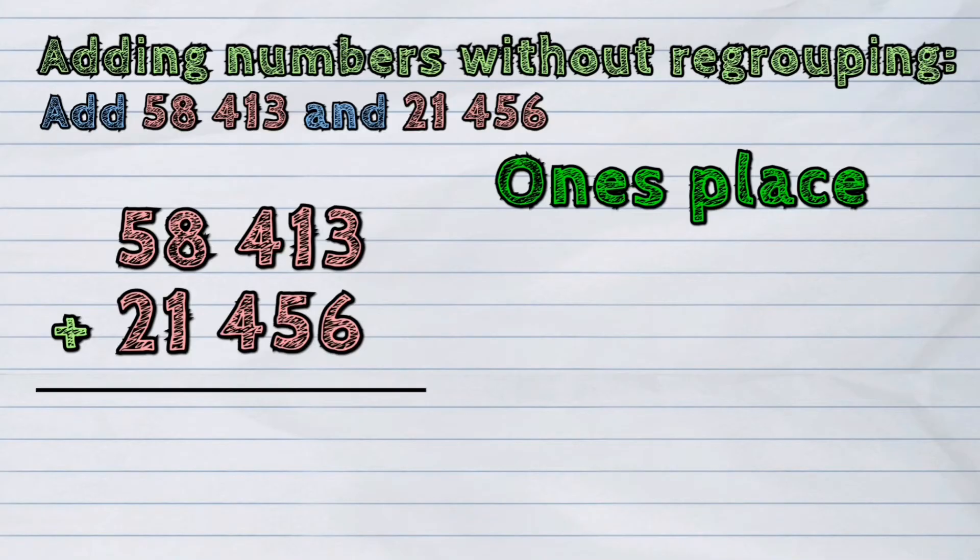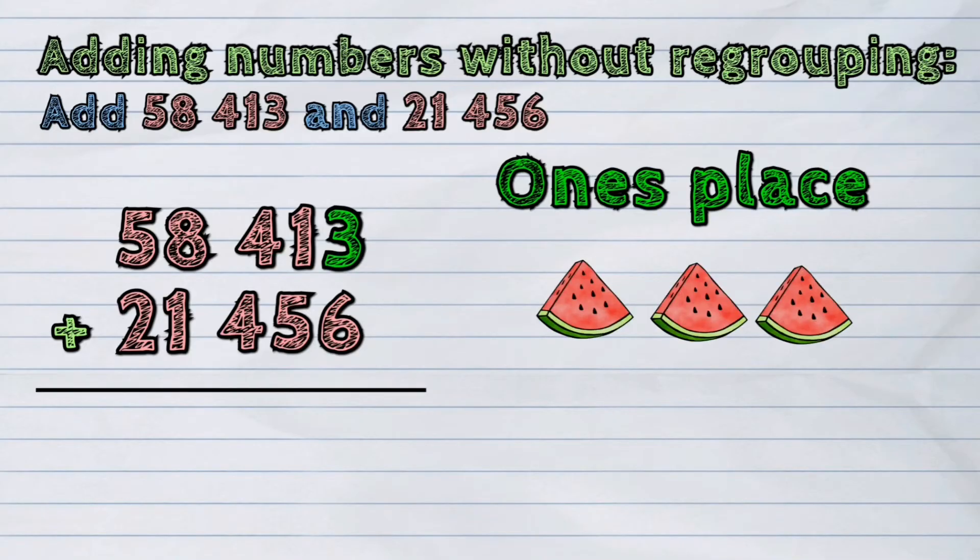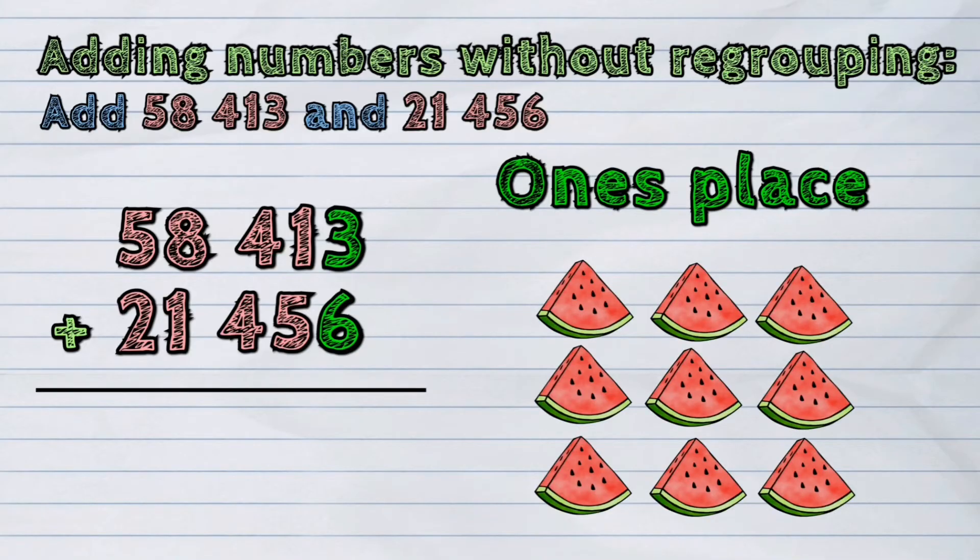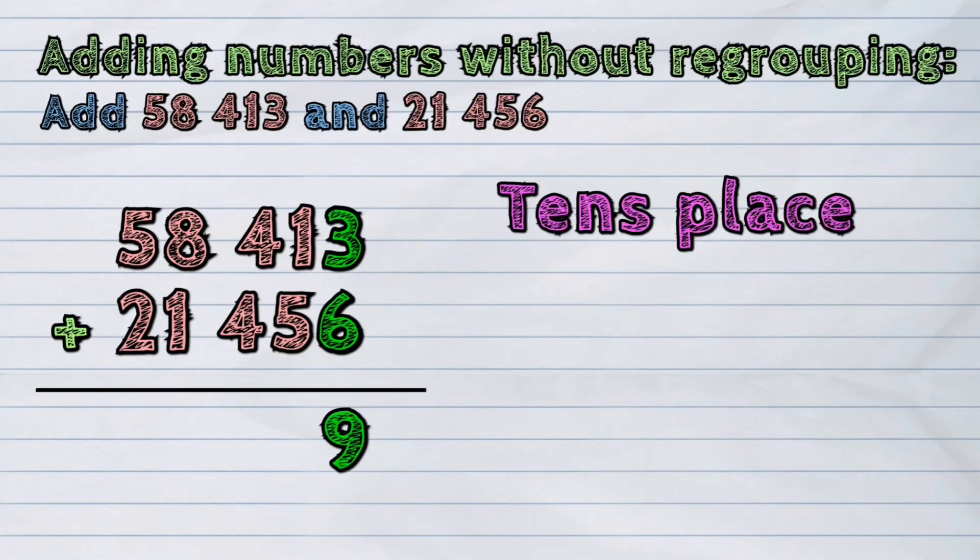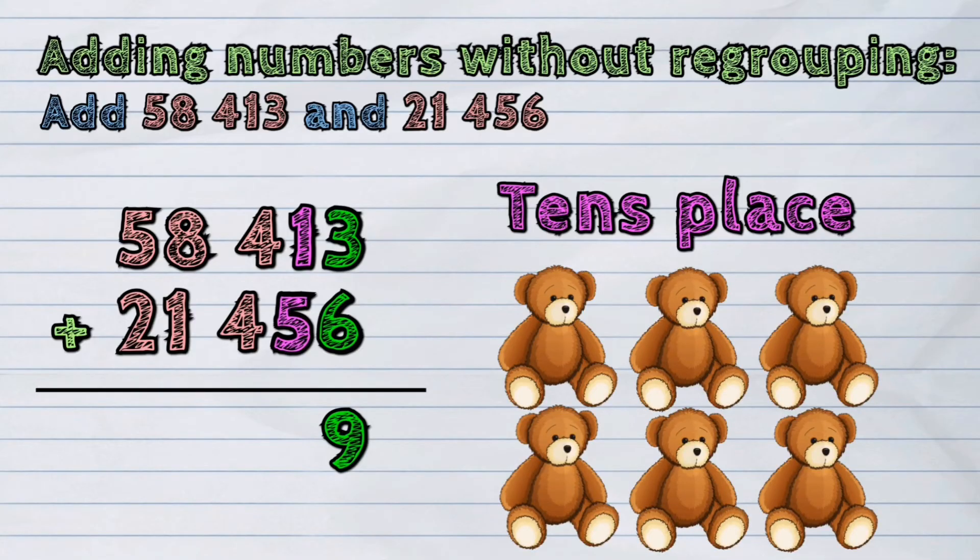If we add 3 and 6, the sum is 9. Now, we will add from the 10's place. Adding 1 and 5 will give the sum of 6.